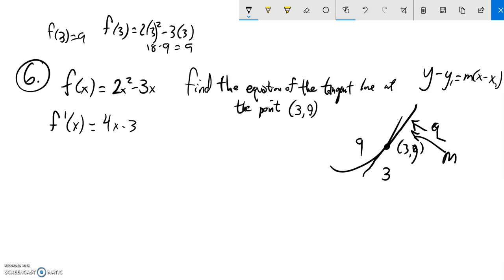So if I know that's true, then I know the slope at this point is 4 times 3 minus 3, 12 minus 3 is 9. So I know the slope's 9. So if the slope's 9, my equation of my line would be y minus the y part of the point, 9, equals the slope times x minus the x part of the point.